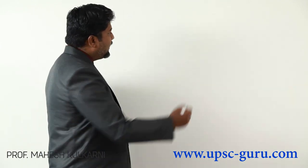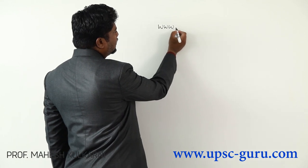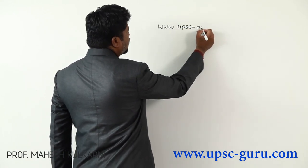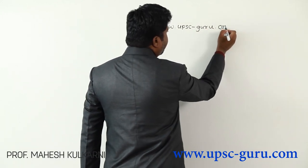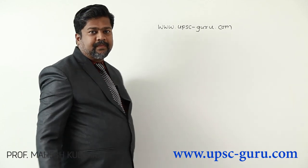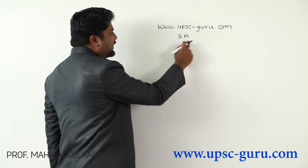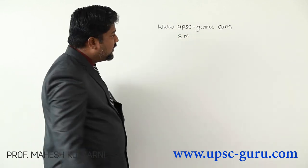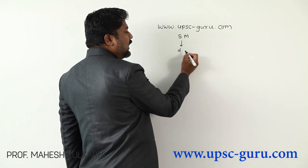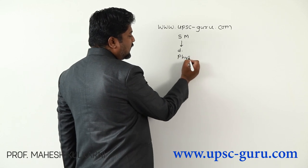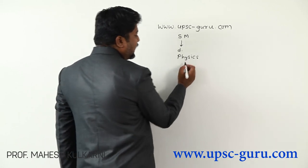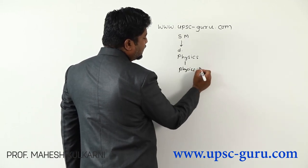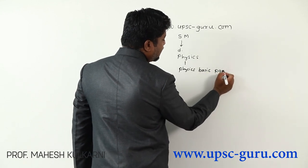Welcome to this paper analysis — Physics Basic Paper 1. To get this paper, you have to visit our website www.upsc-guru.com. Visit the study material tab, then go to downloads, and search for physics. The category of download is recognized as physics, and in that category you will get Physics Basic Paper 1.